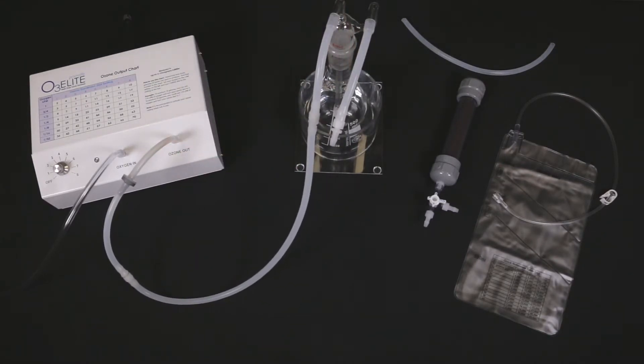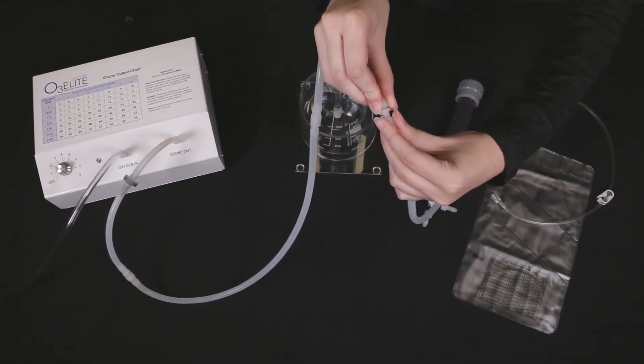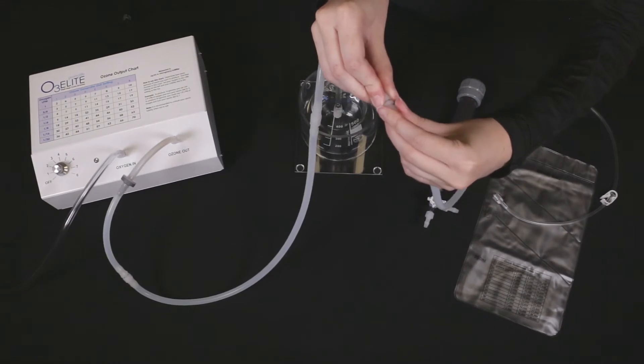To connect the destruct, take one of the pieces of 3 feet of silicone tubing and connect one end to the other straw of the humidifier, the ozone out-straw, and the other end to the destruct.